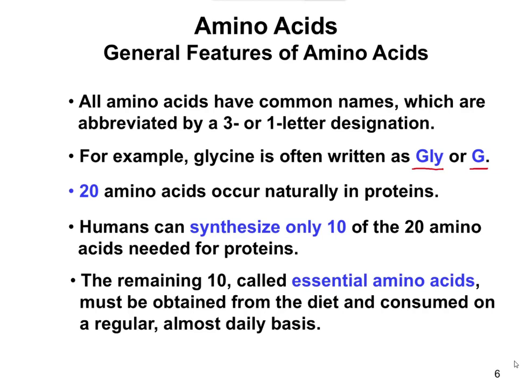There are 20 amino acids that occur naturally in proteins. Humans can synthesize 10 of them from scratch; the other 10 are called essential amino acids. Just like essential fatty acids, essential means they must be consumed in our diet. This is why eating protein is important — not only because we can't store them, but because we need a constant influx of these essential amino acids that can only come from our diet.